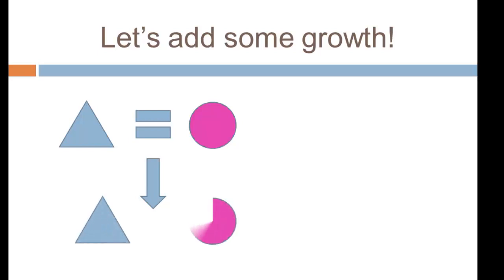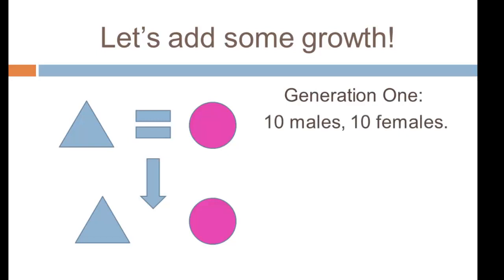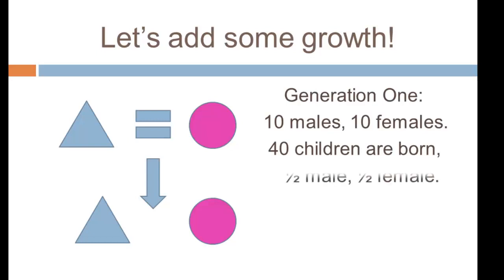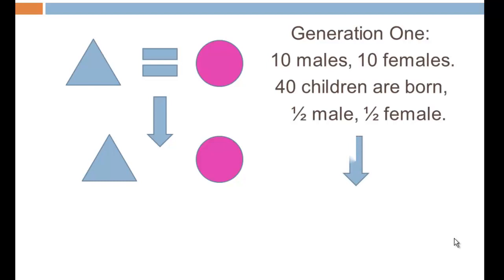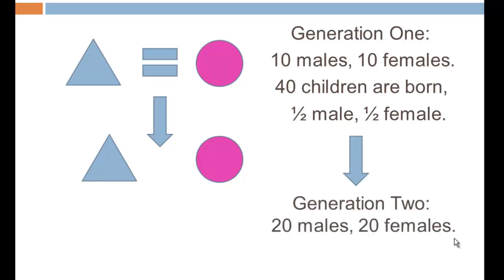The first generation is 10 males and 10 females, but we're going to say 40 children are born to that generation, so on average each woman has four children that survive to adulthood — half male and half female. In generation two we now have a population of 40, with 20 males and 20 females.